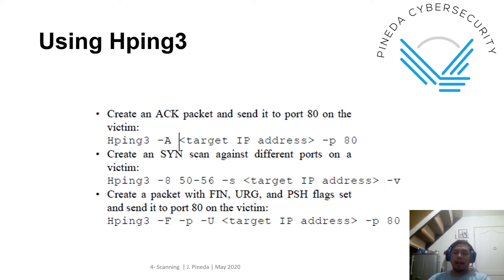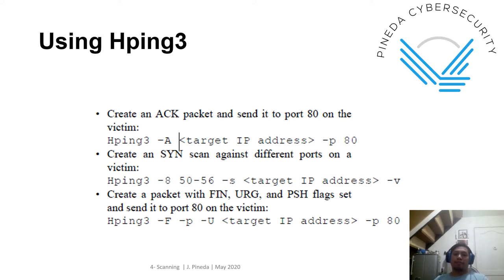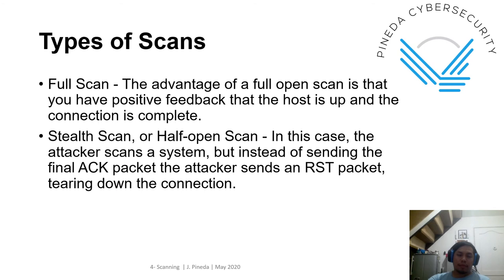To create a packet with FIN, URG, and PSH flags set to port 80, you use the corresponding hping3 command and wait for the reply. Types of scans: a full scan completes a full three-way handshake — the advantage is positive feedback that the host is up and the connection is complete. However, this is very noisy and easy for an intrusion detection system to detect, flag, and record your IP.